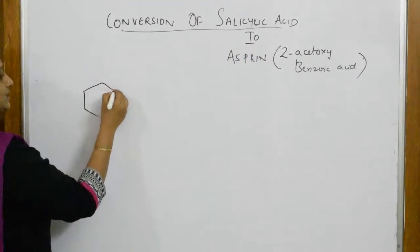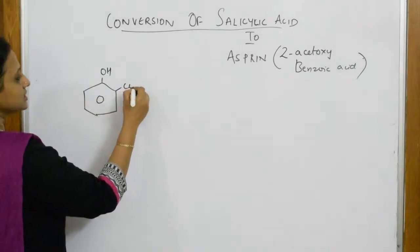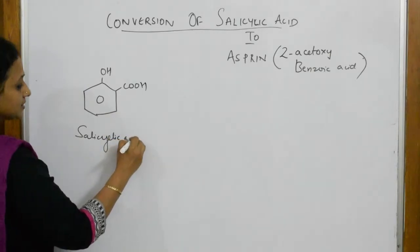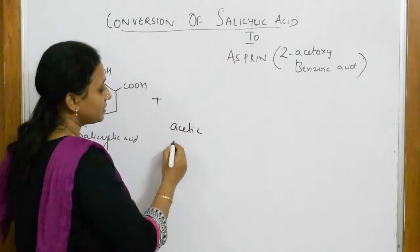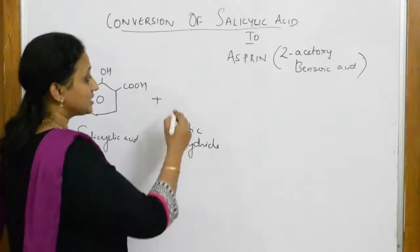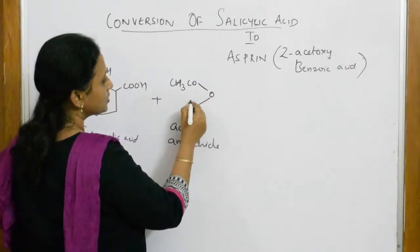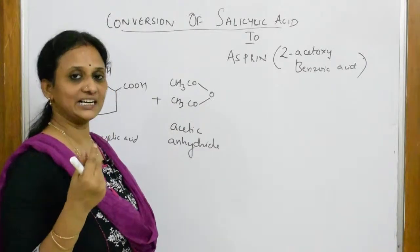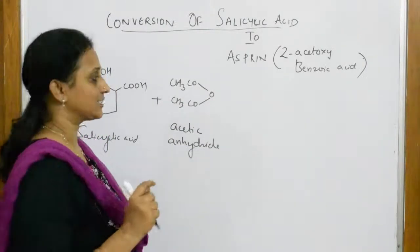Salicylic acid has an -OH and a -COOH group. To this salicylic acid, you're going to introduce a compound called acetic anhydride. Acetic anhydride is CH3CO-O-COCH3 — basically you have taken two moles of acetic acid and dehydrated one water molecule, and you get acetic anhydride.